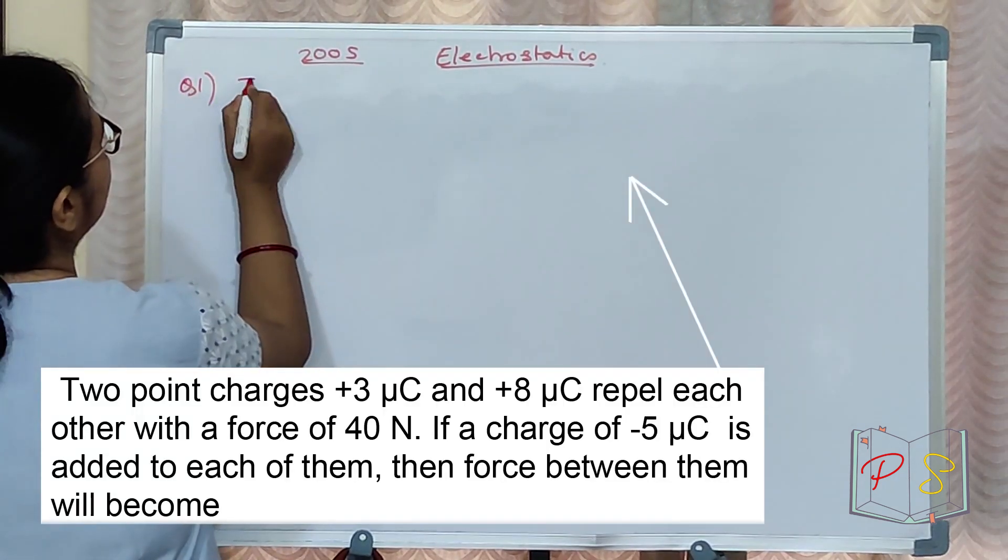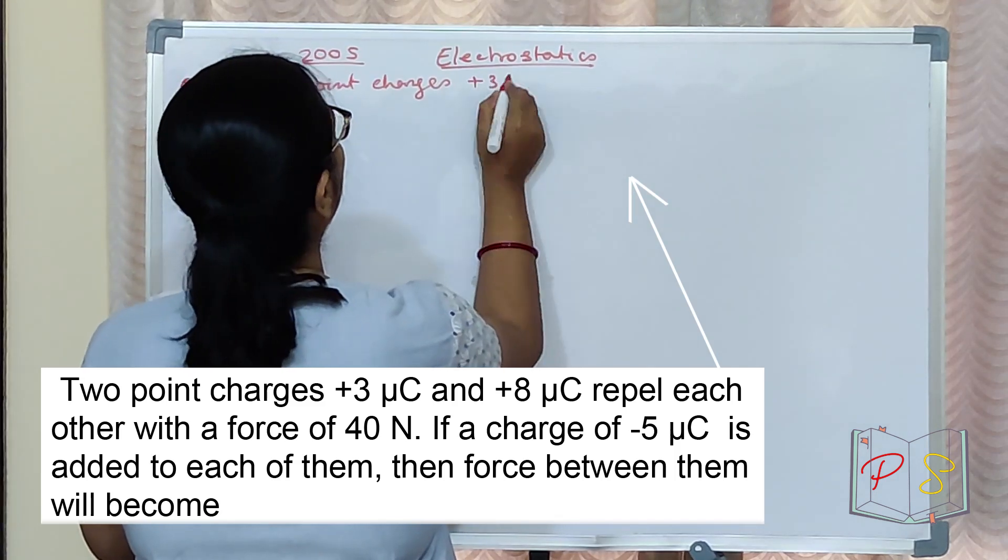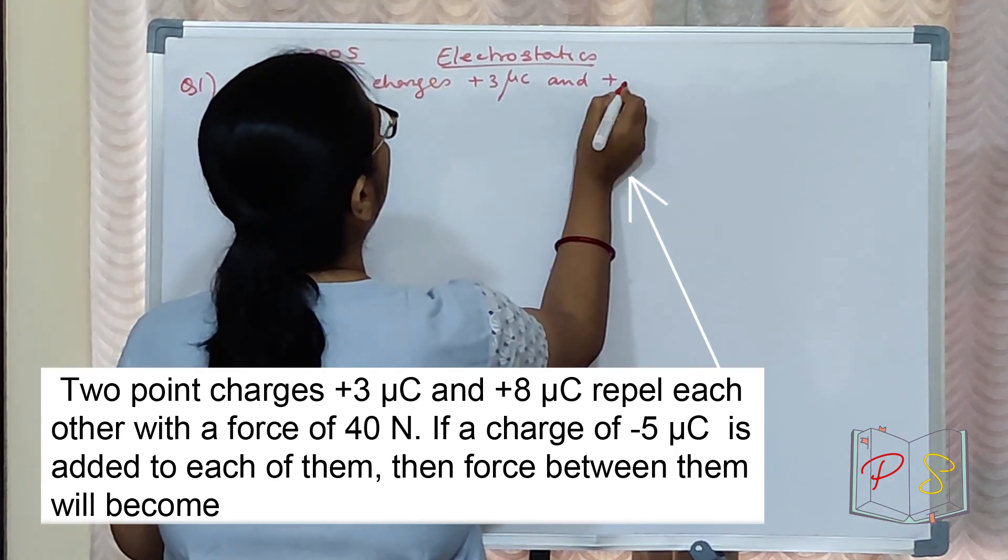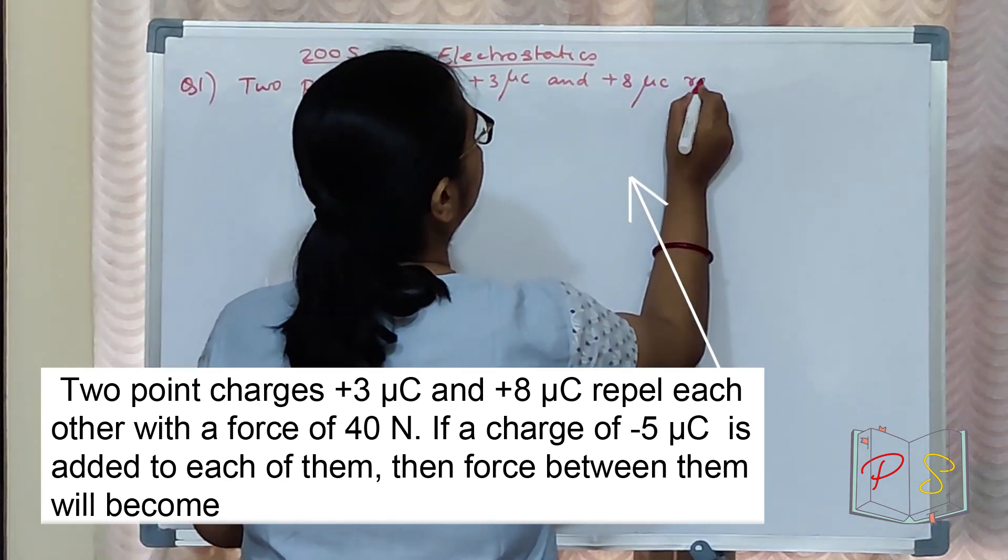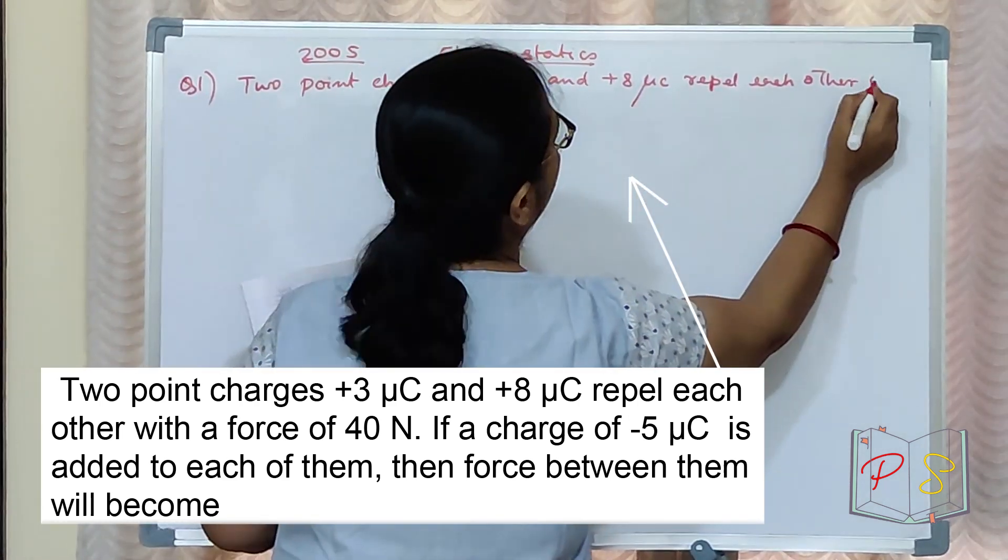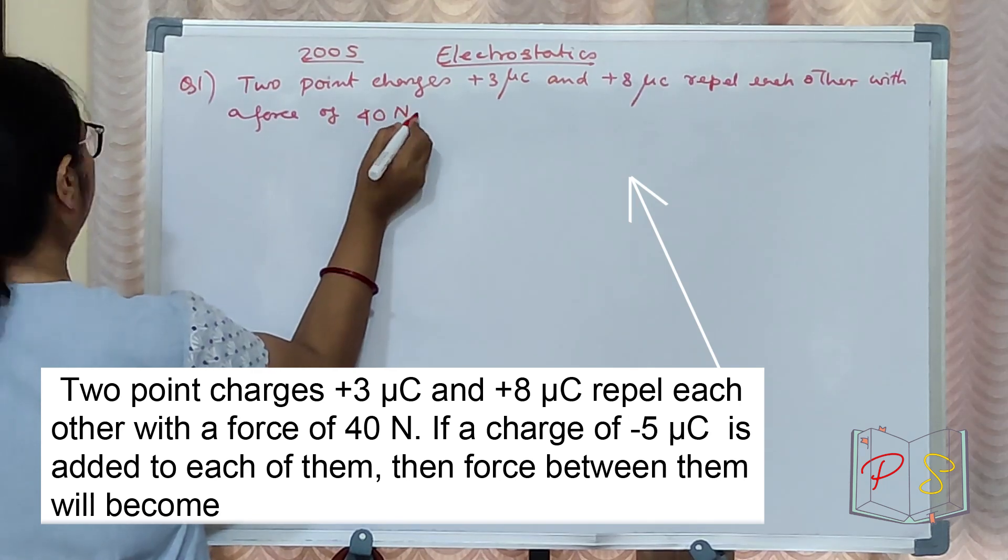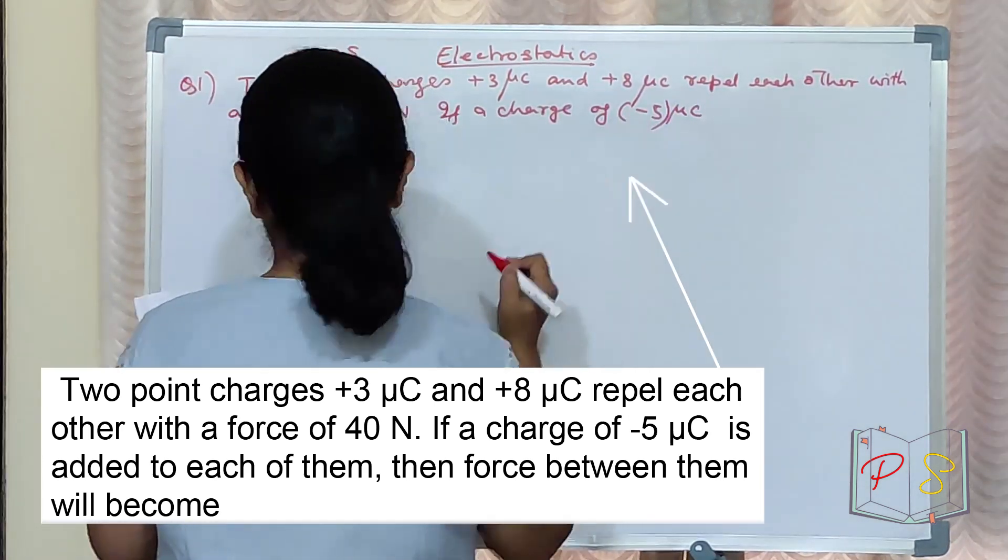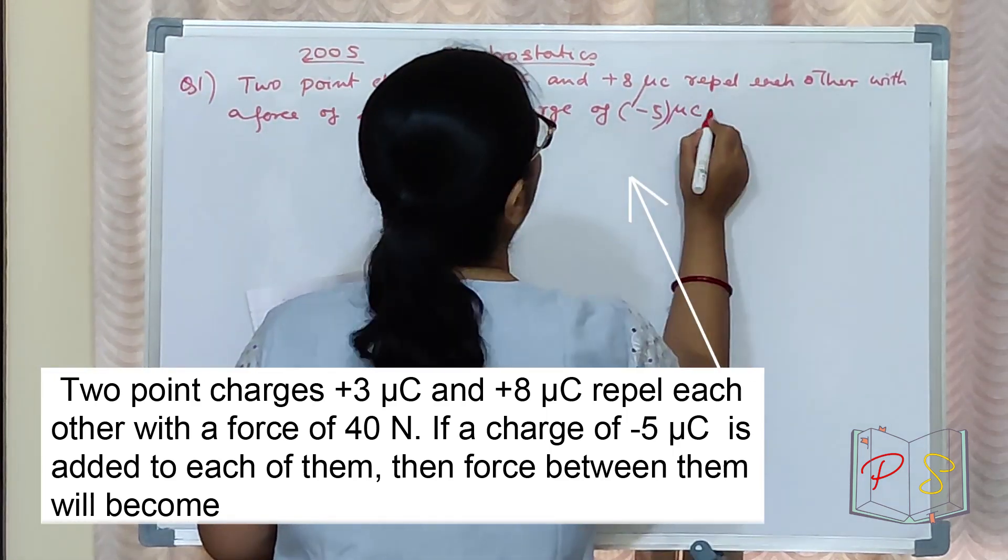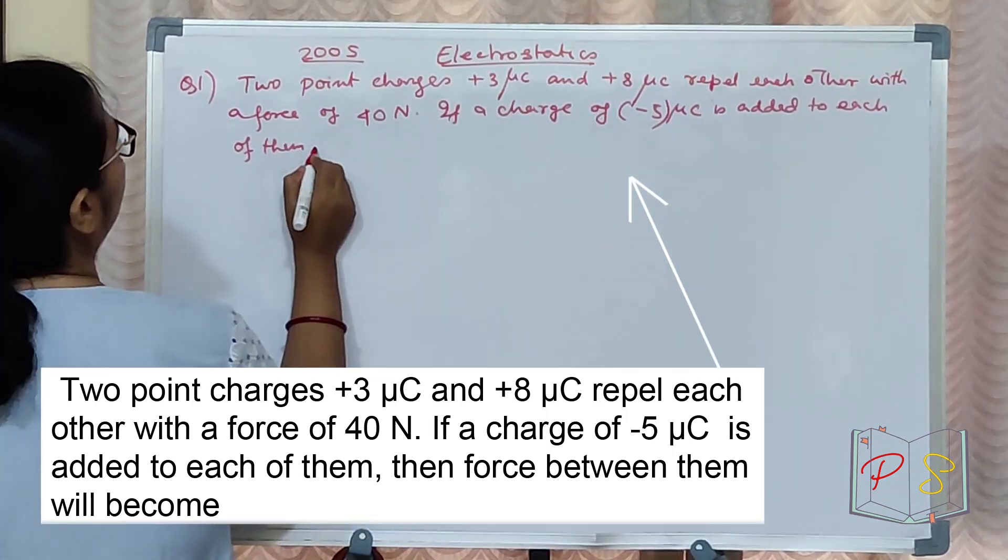Two point charges plus 3 micro coulomb and plus 8 micro coulomb repel each other with a force of 40 Newton. If a charge of minus 5 micro coulomb is added to each of them, the force between them will become.